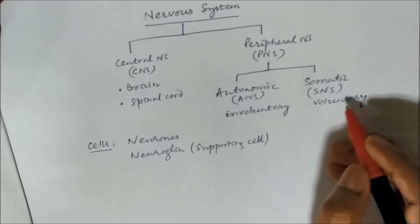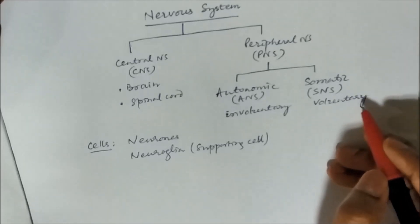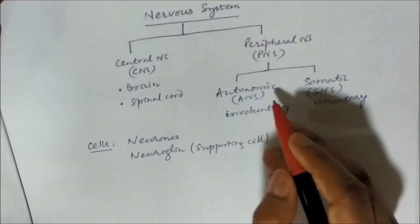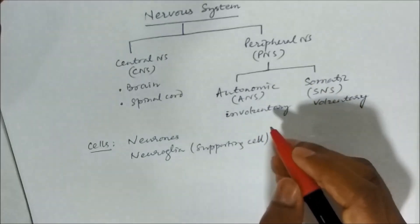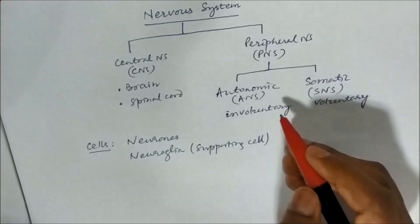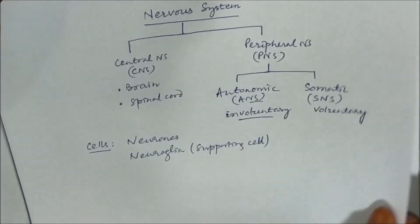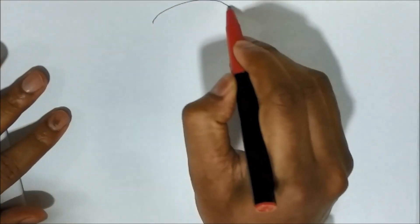For example your biceps, you can contract or relax the skeletal muscle so that is somatic, whereas the heart rate we cannot control. If you run, automatically the heart rate will increase and if you take rest automatically the heart rate will decrease, so that is involuntary ANS. So first let us draw the diagram.